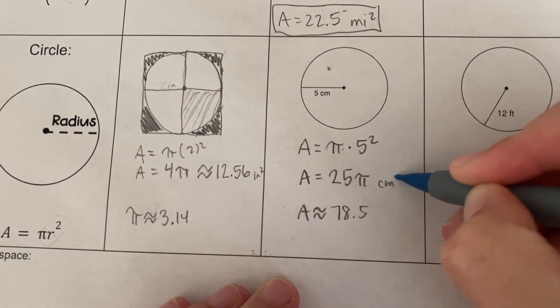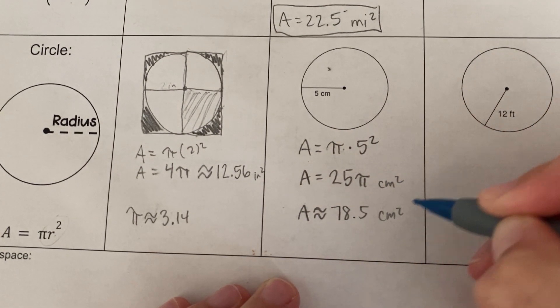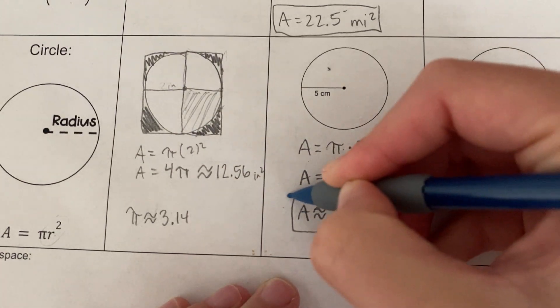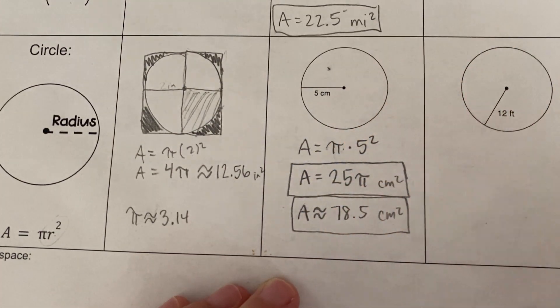Oh, and I forgot my units. Look, this is centimeters, square centimeters. This is square centimeters. Okay, so please do both answers. That way, whatever you're asked for, you're prepared to do.